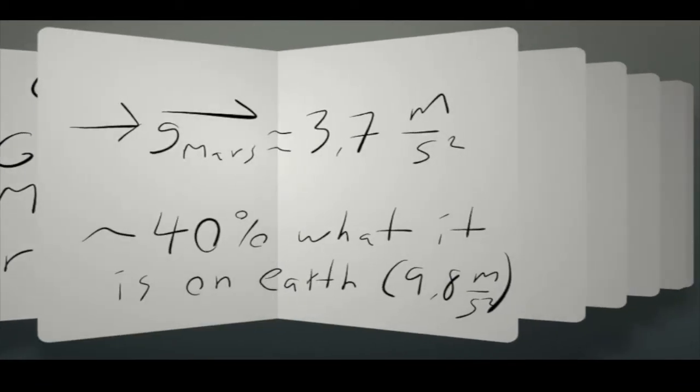Once we enter those things into the equation we get that the acceleration due to gravity on Mars is about 3.7 meters per second squared. That's about 40% what it is on Earth. On Earth it's going to be about 9.8 meters per second squared.